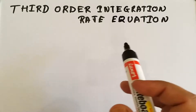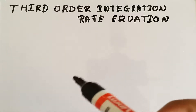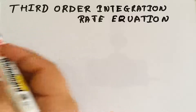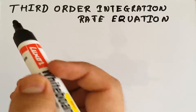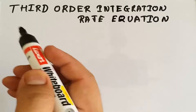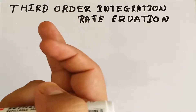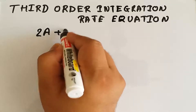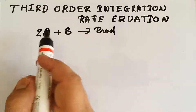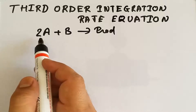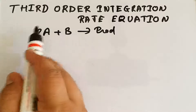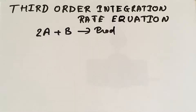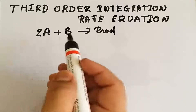Welcome. Today we are going to discuss the third order integrated rate equation wherein two molecules are identical and the third one is different. For a third order reaction, three molecules are needed. Here we have two types of molecules: two molecules of type A and one molecule of type B. The reaction is 2A + B → Product. This reaction is second order with respect to A, first order with respect to B, giving a net third order reaction.